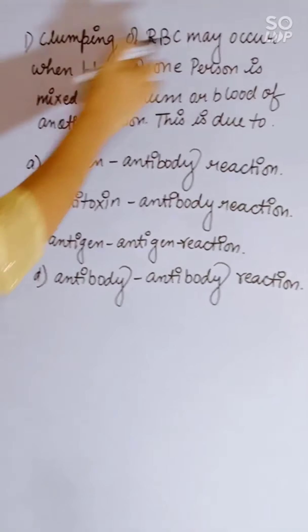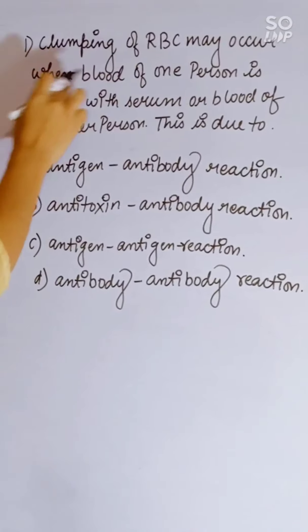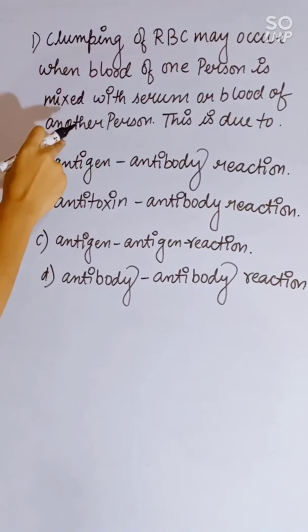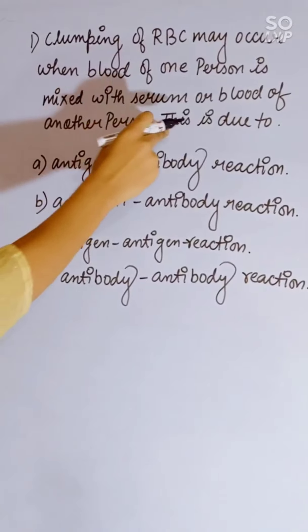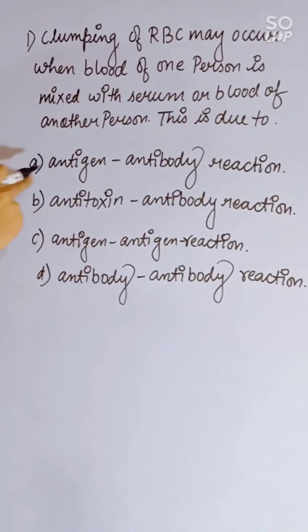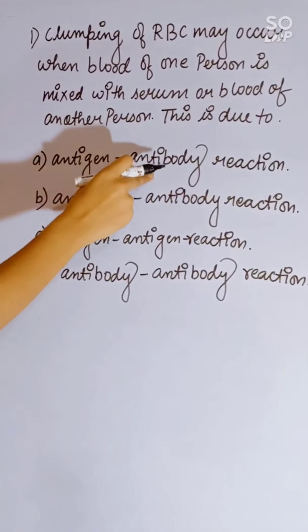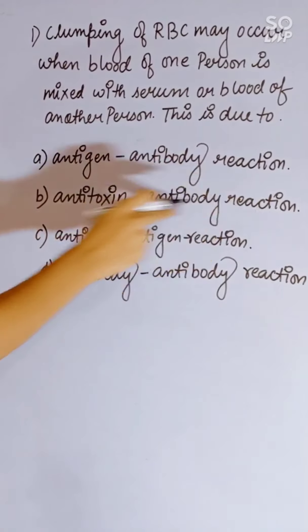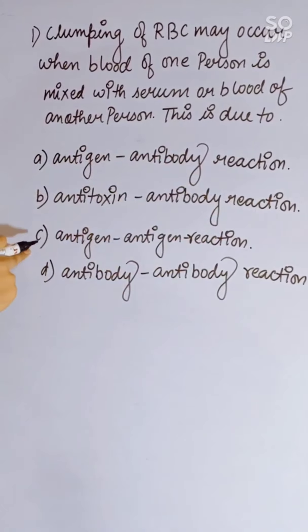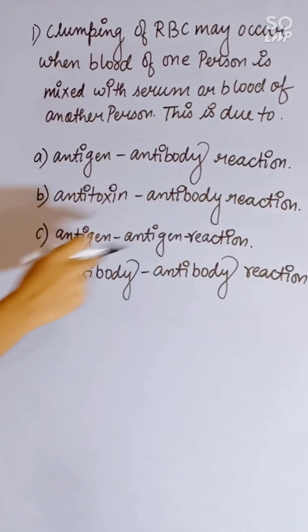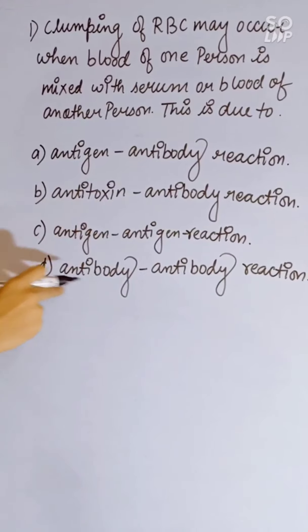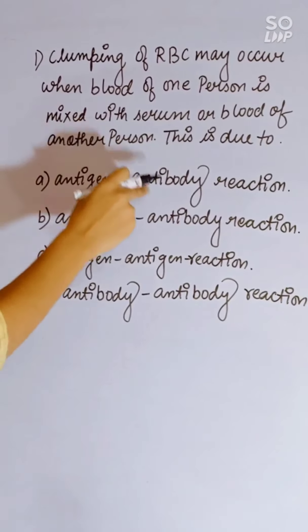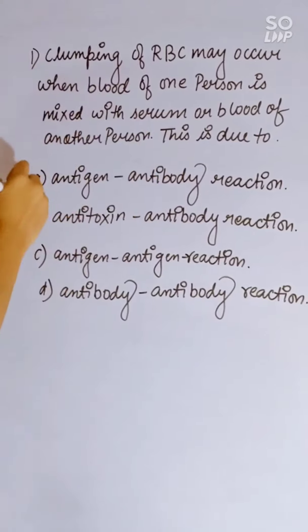Clumping of RBC may occur when blood of one person is mixed with serum or blood of another person. This is due to: antigen-antibody reaction, antitoxin-antibody reaction, antigen-antigen reaction, or antibody-antibody reaction. Correct answer is antigen-antibody reaction.